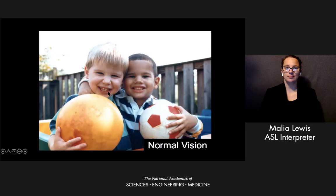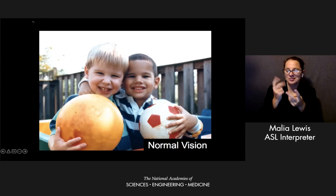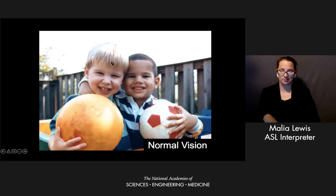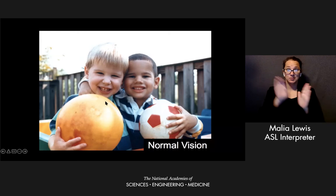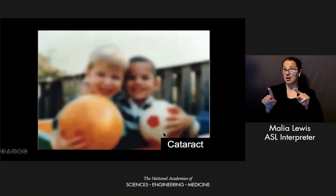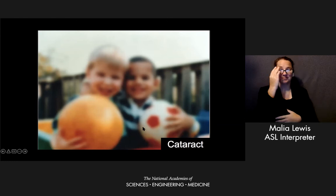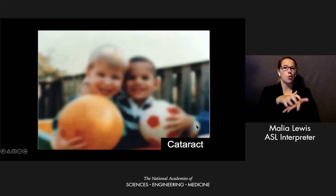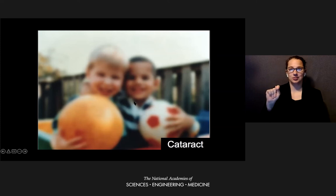Let me show you some rough visualizations of what low vision could look like. It can come in many forms. Let's say this photo of two boys holding two balls represents what a person with typical vision sees. A person with low vision might see the image like this — a rough simulation of what someone with a cataract might see, where colors are a bit dull and it's a little blurry.